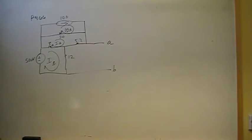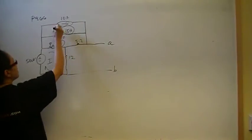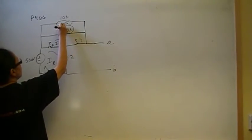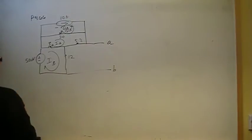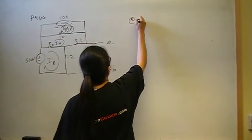It says that the sum of the voltage drops around a closed mesh is zero. The direction of the voltage rise is in this direction, so it goes from minus to plus Vx in that direction.